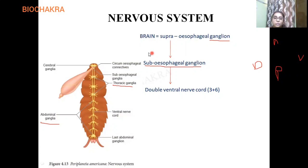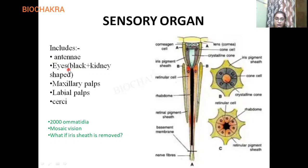That was all about the nervous system. Now, sensory organs of the cockroach include: antennae, eyes, maxillary palps, labial palps, cerci, etc. The eyes are black and kidney-shaped. The maxillary palps are basically used for tasting the food — they help in food tasting.